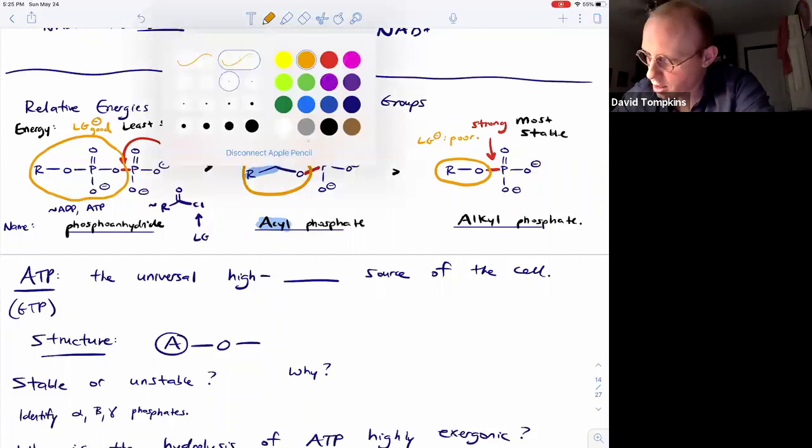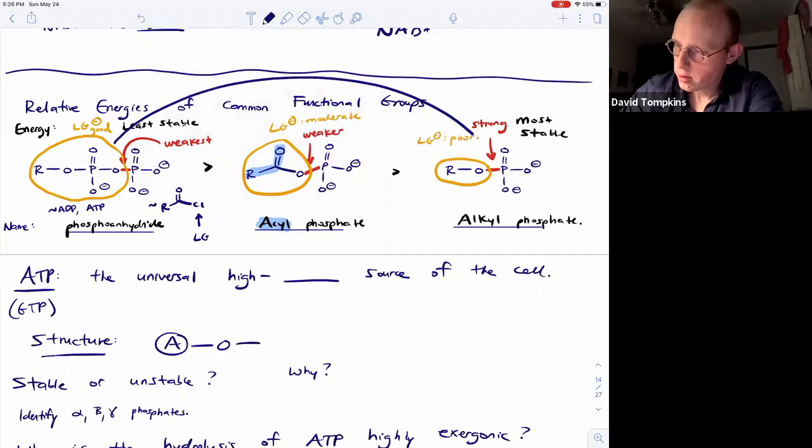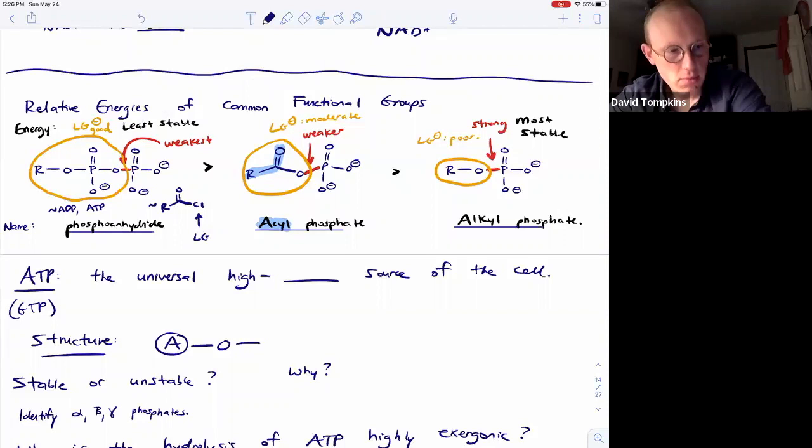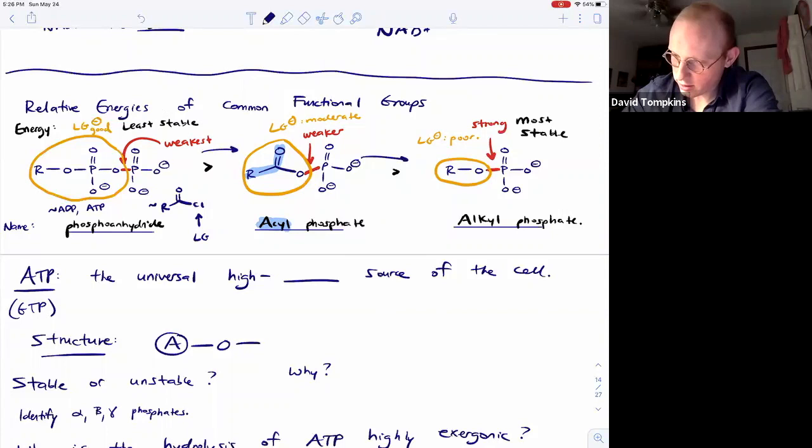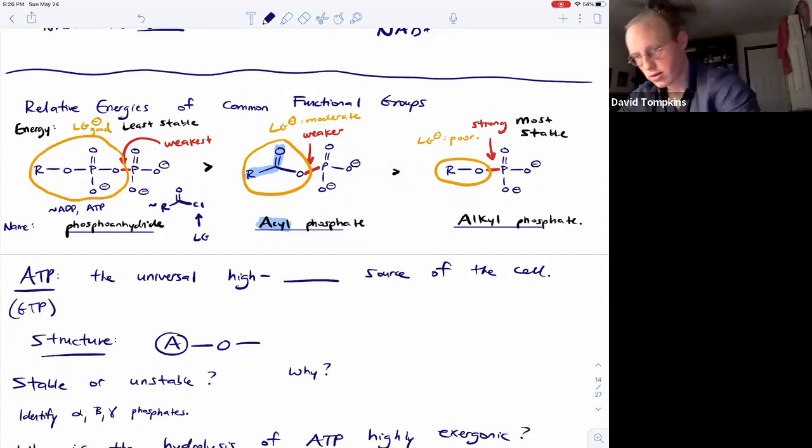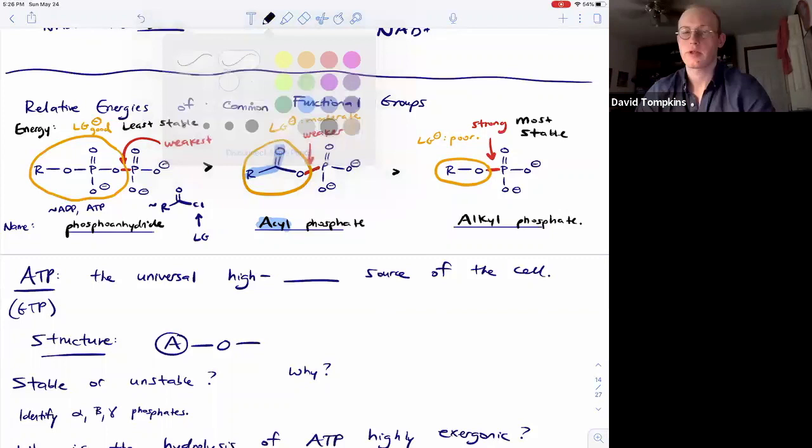So we will see that it is irreversible to go from phosphoanhydrides to alkyl phosphates, and we will do that process multiple times during glycolysis. And anytime you're moving from left to right, from phosphoanhydride to acyl phosphate to alkyl phosphate, then you're going to be going downhill and the phosphate-containing compound in the product will be more stable than the starting materials were.